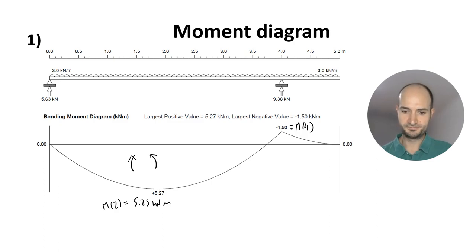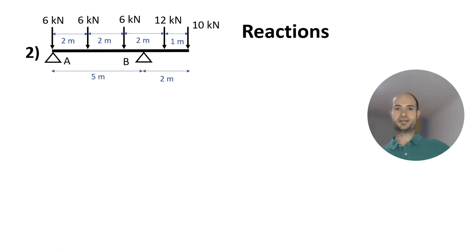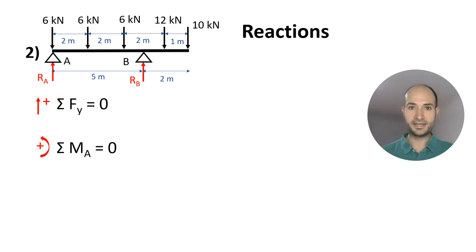Now, let's go to exercise 2. In this case, we have another cantilever, but with many point loads and no line loads. As before, let's calculate the reactions with the static equations. We have that RA plus RB is equal to 6 kN times 3 plus 12 kN plus 10 kN, and that's a total of 40 kN.